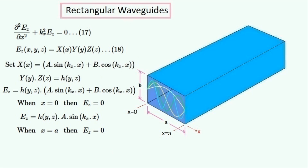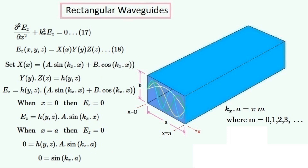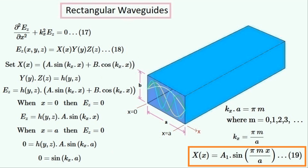EZ is also equal to zero at the right-hand wall when X is equal to A. We'll substitute all of this into the equation for EZ. Then this sine function must be equal to zero because it is the only term that can be non-zero when X is not equal to A. We can then solve this equation for KX because the sine function will be zero whenever KX times A equals M times pi. This is what KX is equal to. We'll substitute this term in for KX to give the solution, so this is what the function containing the variable X is equal to.